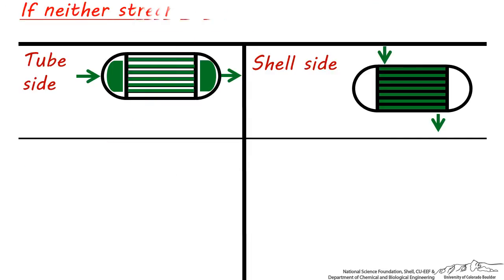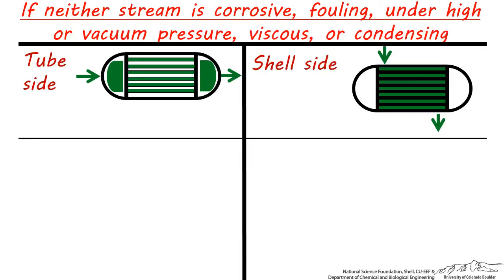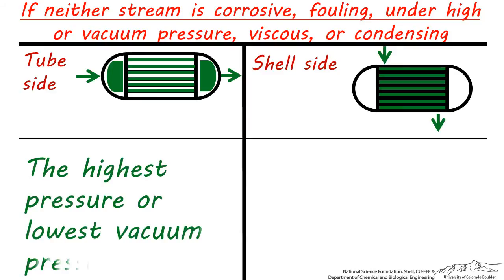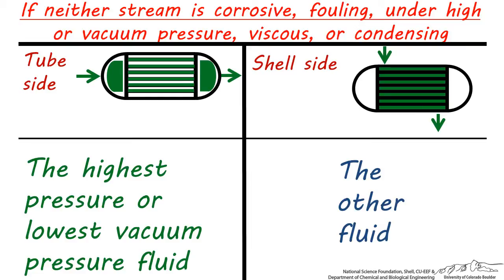If neither stream is corrosive, fouling, under high or vacuum pressure, viscous, or condensing, I would suggest putting whichever stream is under more extreme pressure conditions tube-side and the other through the shell-side. If, by chance, both streams are at the exact same pressure and neither is corrosive, fouling, viscous, or condensing, then it doesn't matter which fluid you put shell or tube-side.